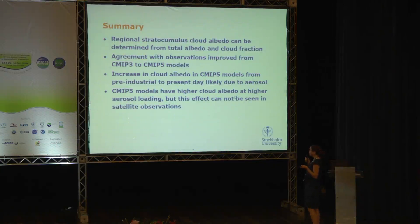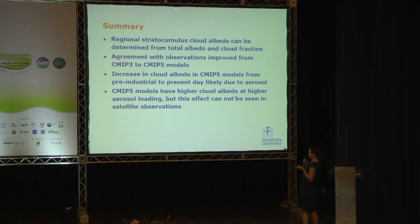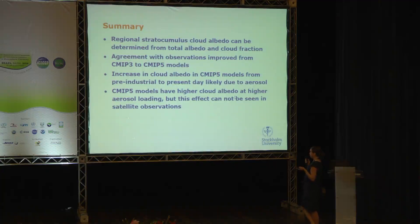To summarize: regional stratocumulus cloud albedo can be determined from total albedo and cloud fraction. Agreement with observations improved from CMIP3 to CMIP5 models. We see an increase in cloud albedo in CMIP5 models from pre-industrial to present day that is likely due to aerosol. And we see that the CMIP5 models show higher cloud albedo with higher aerosol loading, but this effect cannot be seen in the satellite observations.